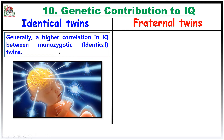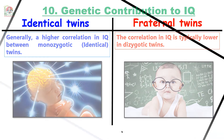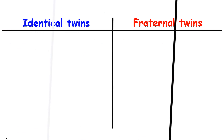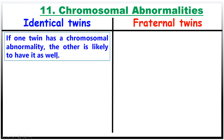The next contrasting feature is the genetic contribution to IQ. Generally, a high correlation in IQ between monozygotic or identical twins is seen — it can be a plus point, as if one twin is intelligent the other will be equally intelligent. On the other hand, the correlation in IQ is typically lower in dizygotic twins.